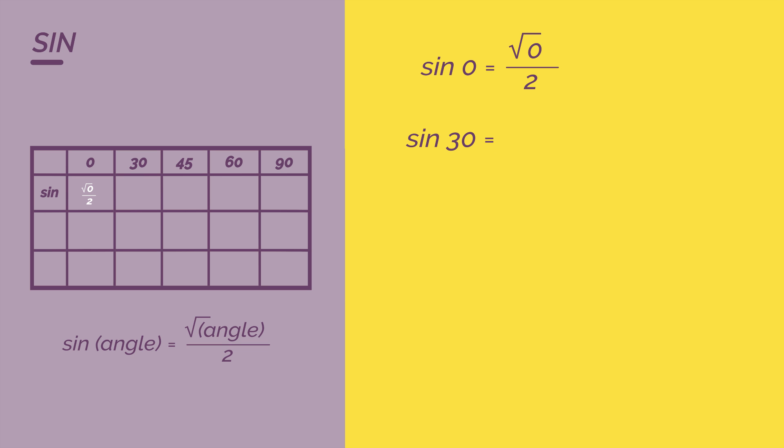Sine of 30 is root one divided by two. 45 is root two divided by two. 60 is root three divided by two. And 90 is root four divided by two.